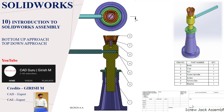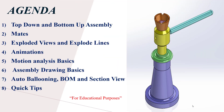Hello everyone, myself Giresh with the SOLIDWORKS series of tutorials, here with introduction to SOLIDWORKS assembly. The agenda of the day: we'll see what exactly the top-down assembly and the bottom-up assembly approaches are, then we'll go through the different types of mates basics, exploded views and exploded lines, animation basics, motion analysis basics, assembly drawing basics for a screw jack assembly, BOM and section views, and finally a few quick tips.